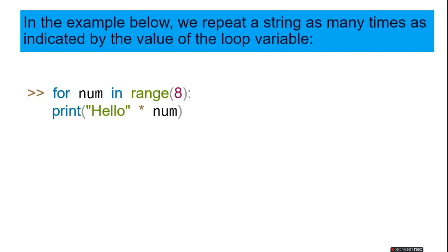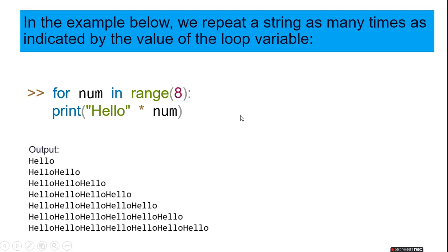In the example below we repeat a string as many times as indicated by the value of the loop variable. For num in range 8, print hello times num. Num starts from 0 and then it will print the string like that. First time it will not add any string, then 1, then 2, then 3, then 4, then 5, then 6.